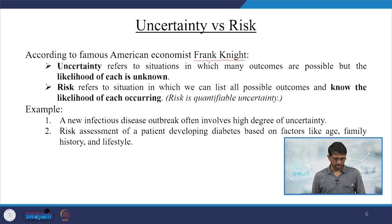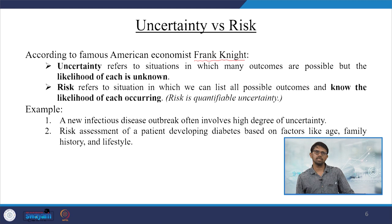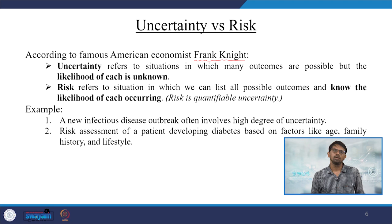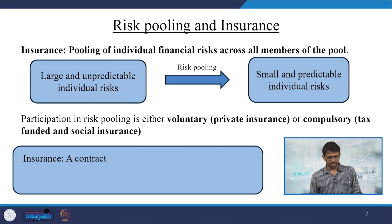For example, a new infectious disease outbreak often involves a high degree of uncertainty, whereas the risk assessment of a patient developing diabetes based on factors such as age, family history, and lifestyle can be calculated through cofactors. We can actually predict or calculate the possible outcomes of diabetes through these cofactors. Let us now move to risk pooling and insurance to address the issues of risk.